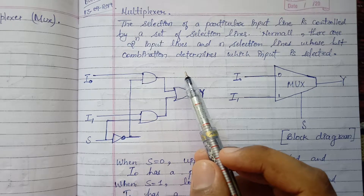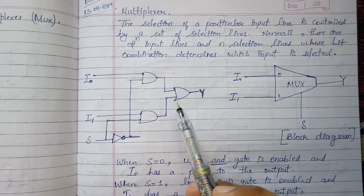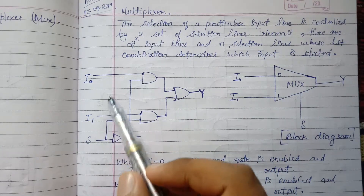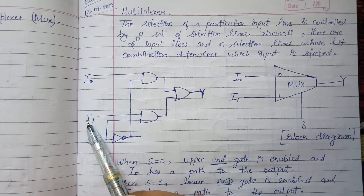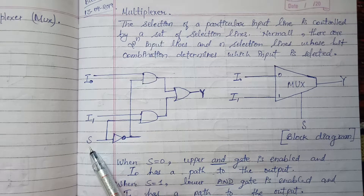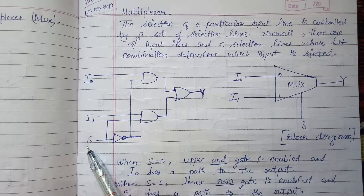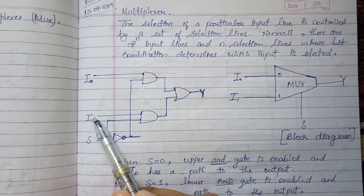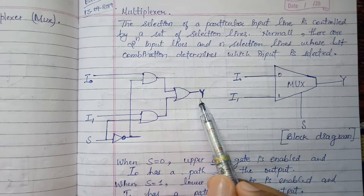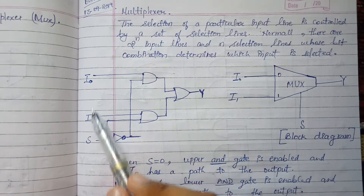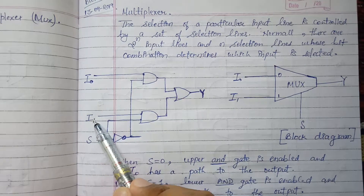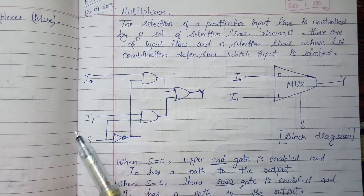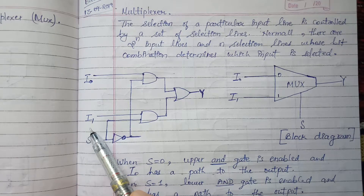In this case we are giving two inputs, I0 and I1, and one selection input. The bit combination of this one selection input will decide which of these two inputs will be the output. The subscript in I0 and I1 describes the decimal value.